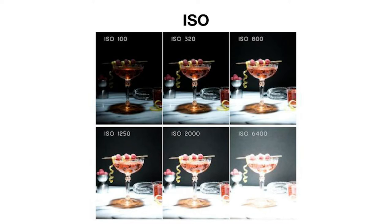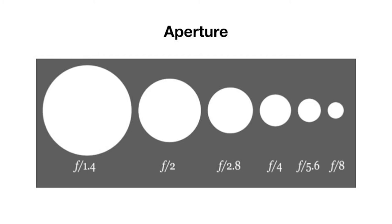Once I set my ISO, the next variable I'll be adjusting is aperture. Aperture refers to how large the opening in the lens of the camera is, which impacts how much light is able to enter. Each lens has an iris which is able to expand and contract, much like our pupils. One of the things that makes aperture a little tough to understand is that smaller numbers refer to larger openings, and as the number gets larger, the opening gets smaller. It's important to understand that this is inverted, so you don't get mixed up and think that smaller numbers are smaller openings.